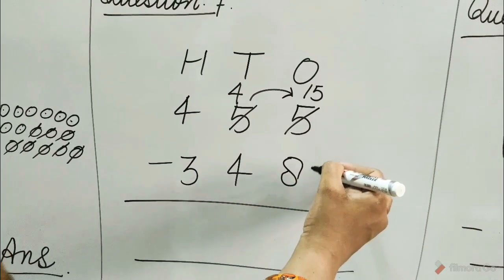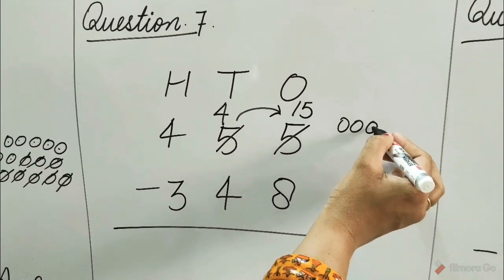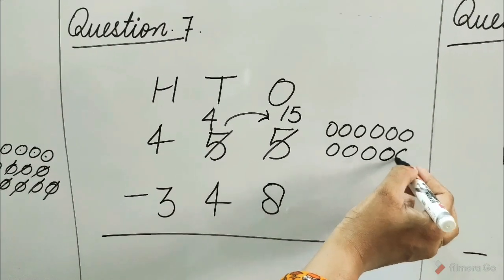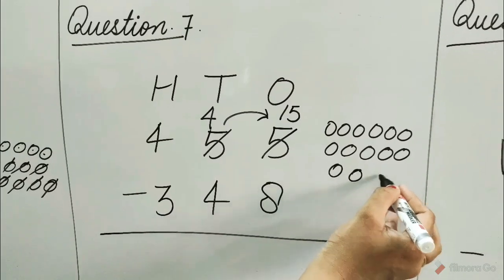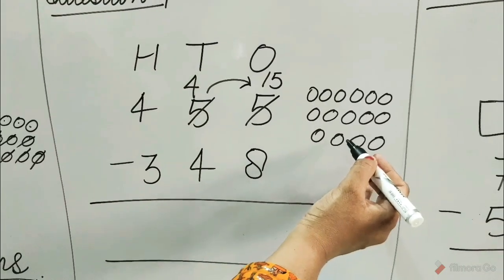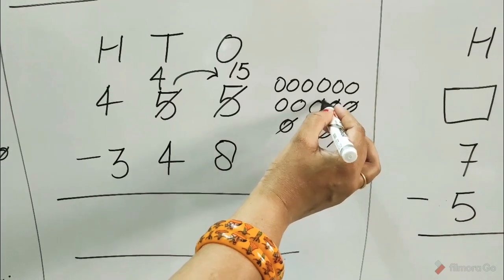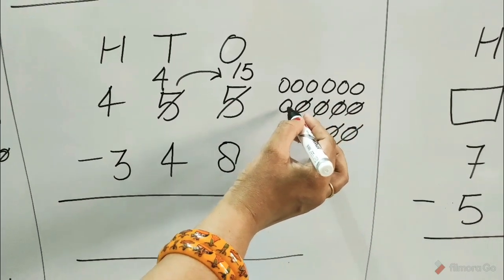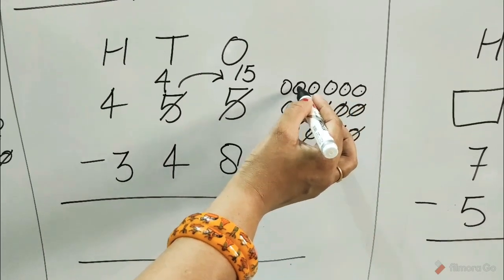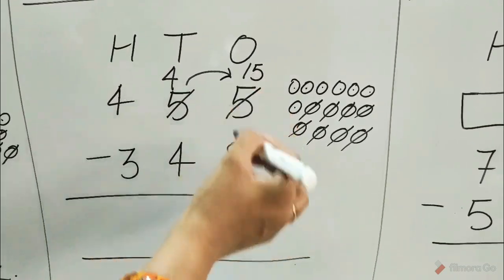Now subtract the ones column. Draw 15 circles: 1 through 15. And cut 8 circles from the 15 circles: 1, 2, 3, 4, 5, 6, 7, 8. Count all the remaining circles: 1, 2, 3, 4, 5, 6, 7. Write 7 under the ones column.